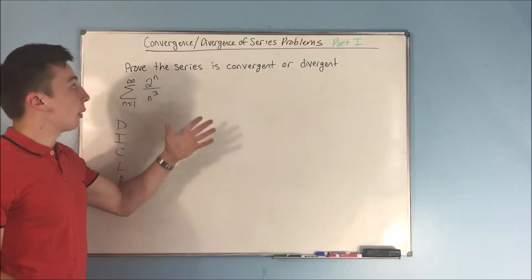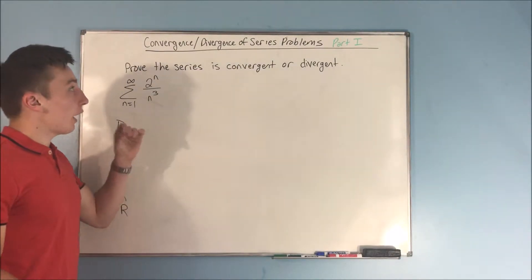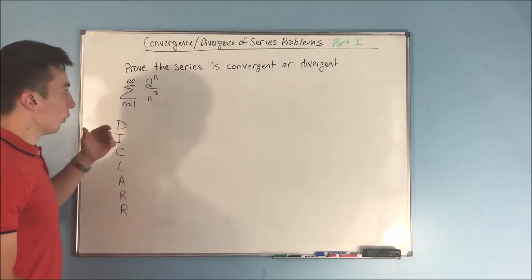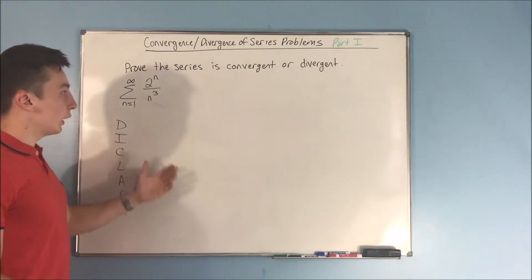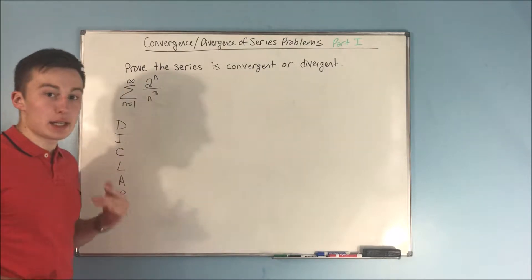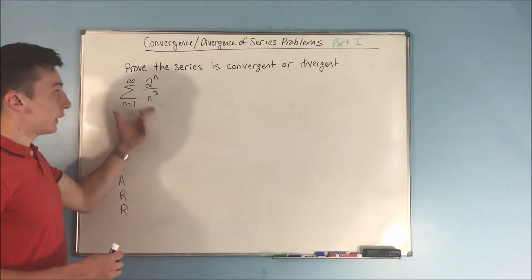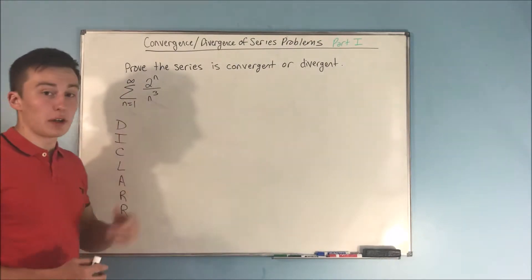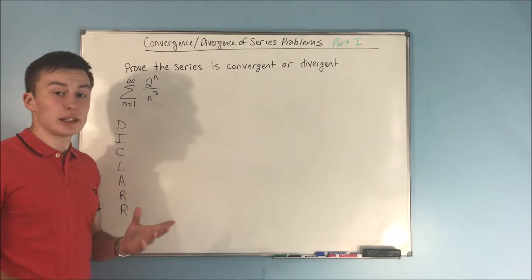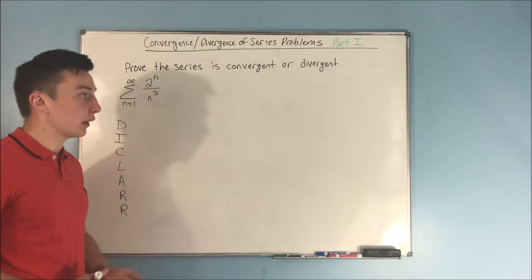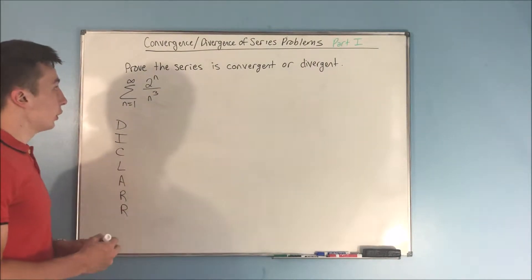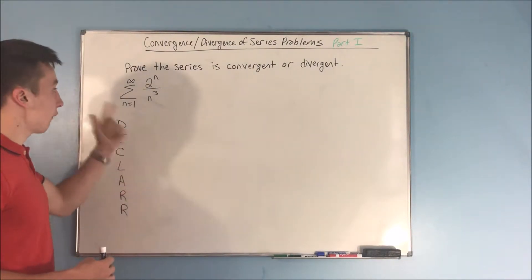This video is going to be part 1 of our convergence and divergence of series problems. I'm going to be taking you through a checklist when trying to prove if a series is convergent or divergent. We're going to be doing a bunch of examples — I'll probably try to have at least 10 videos up. So we want to prove whether each series is convergent or divergent.